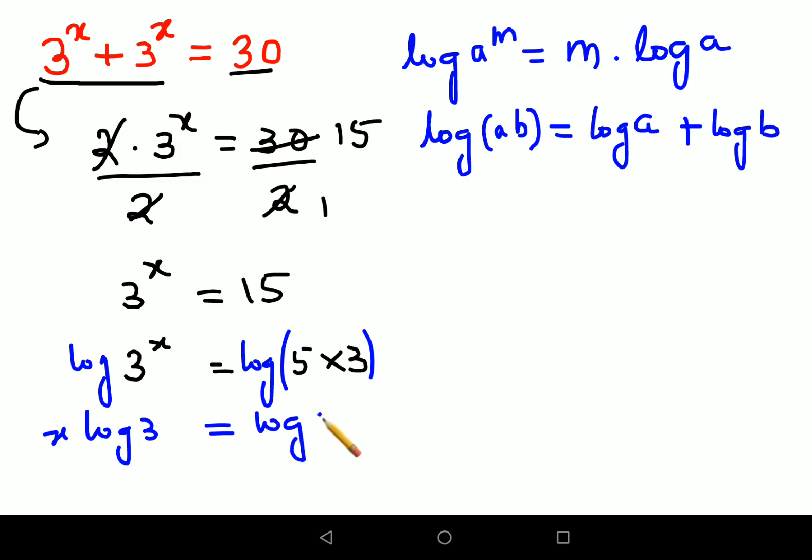So now what happens over here is, in order to find the value of x, let's divide everything by log 3 on both sides. So this is canceling and here what we get is that value of x has now become log 5